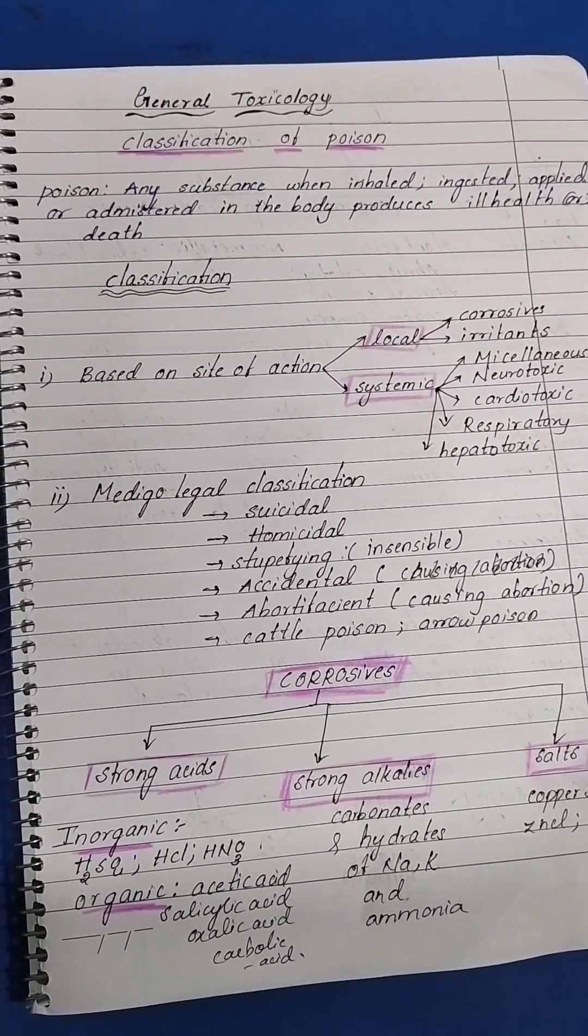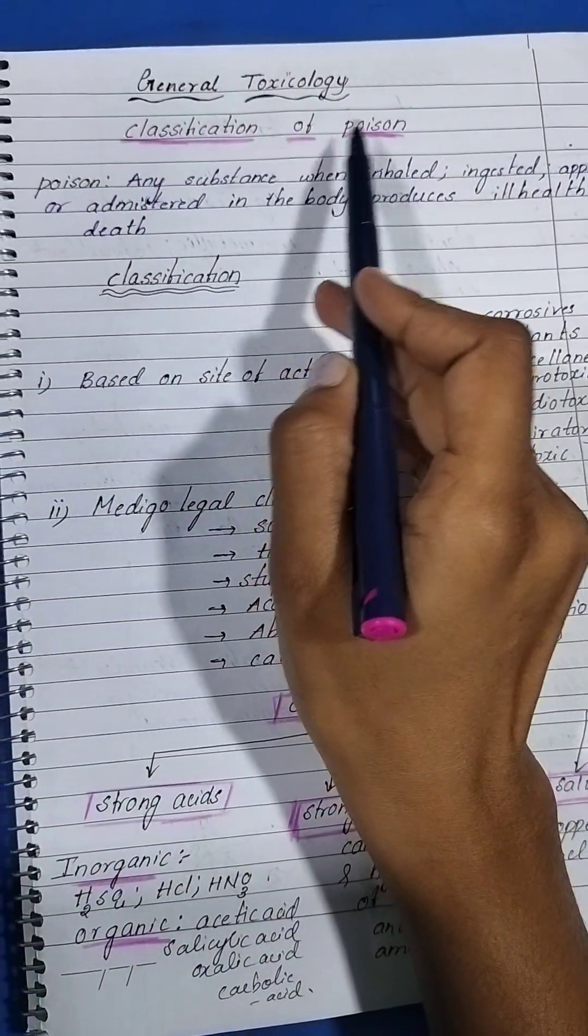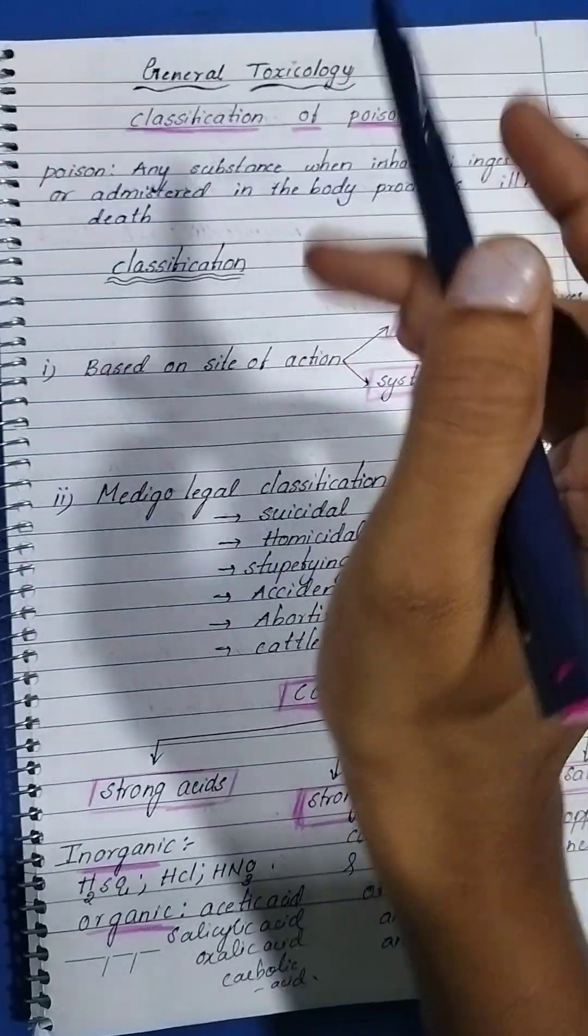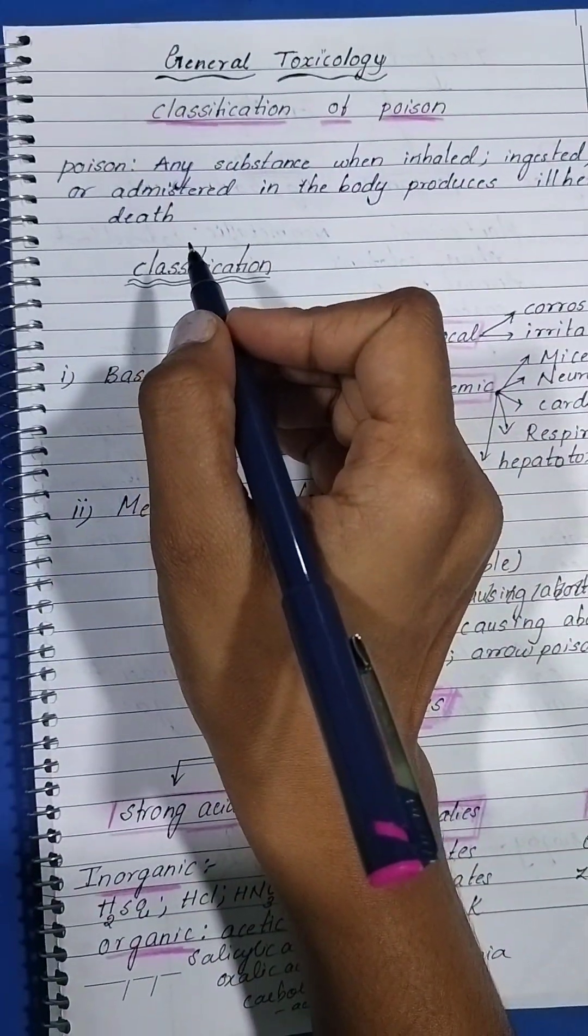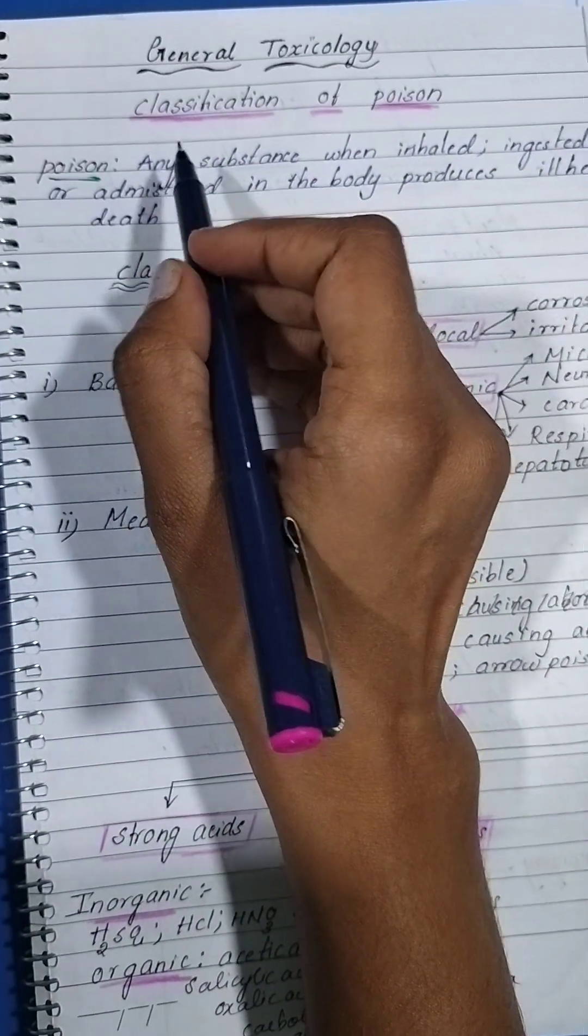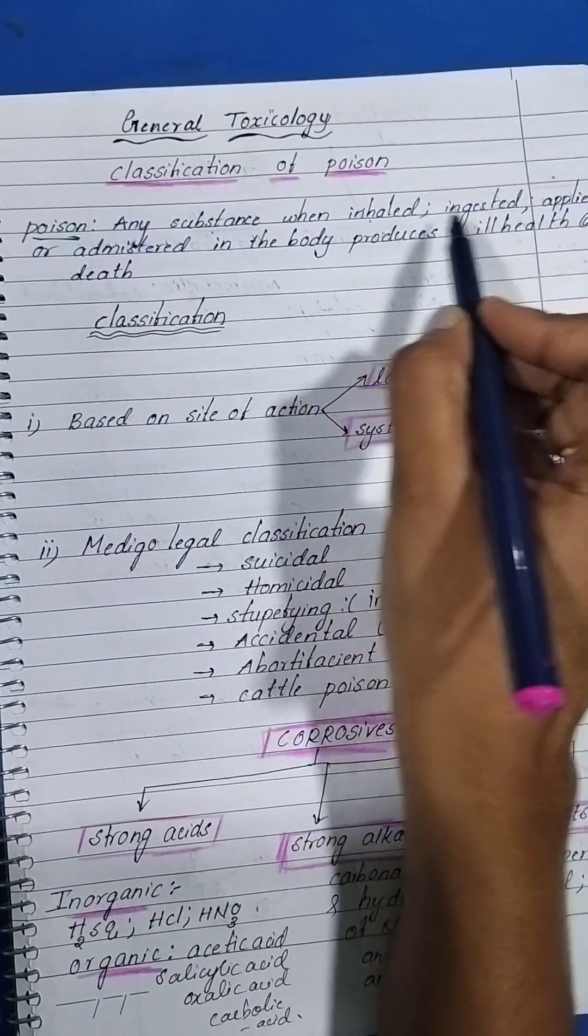Hello guys, welcome to my channel. Today I'm going to discuss the classification of poisons, which is one of the important topics in forensic toxicology. First, let's discuss the definition of poison. Poison is any substance when inhaled,